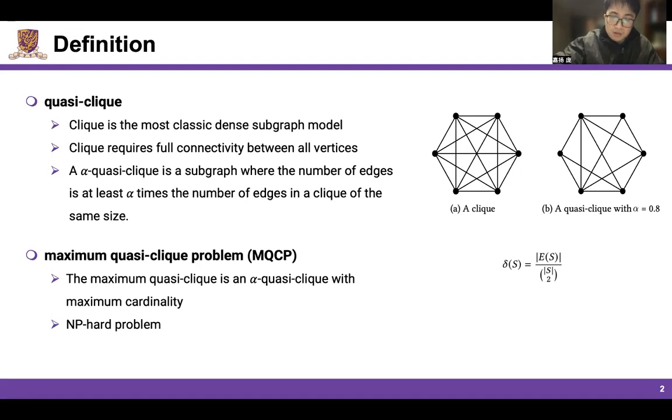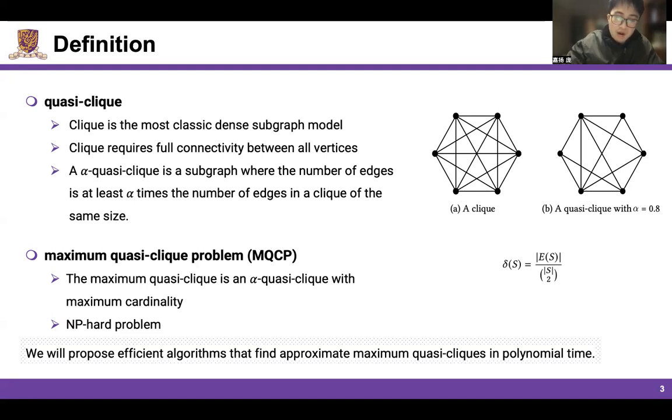The problem we want to solve is the maximum quasi-clique problem. The maximum quasi-clique is an alpha quasi-clique with maximum cardinality. Since the maximum quasi-clique problem is NP-hard, in this paper we propose efficient algorithms that find approximate maximum quasi-cliques in polynomial time.